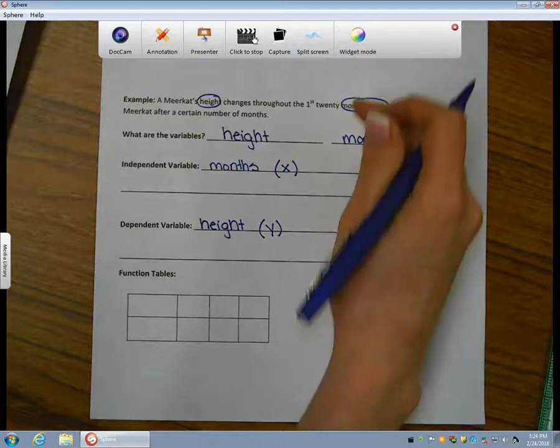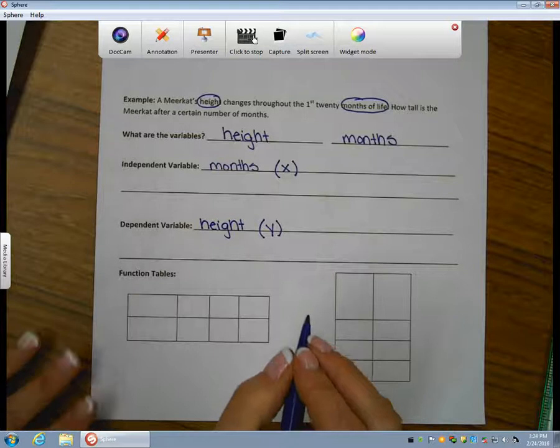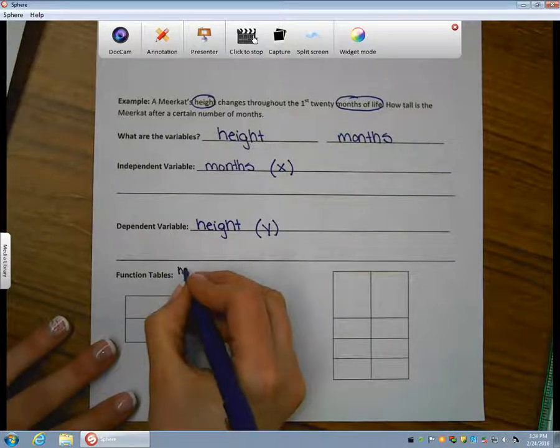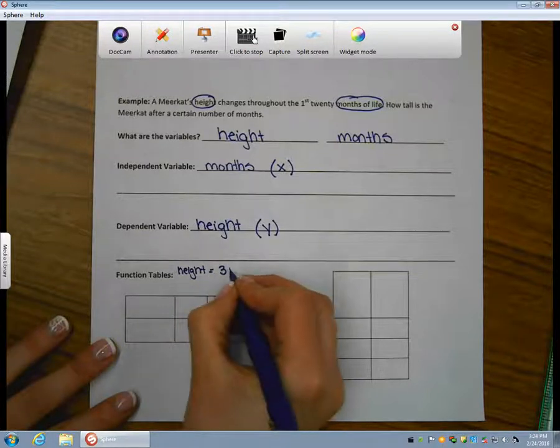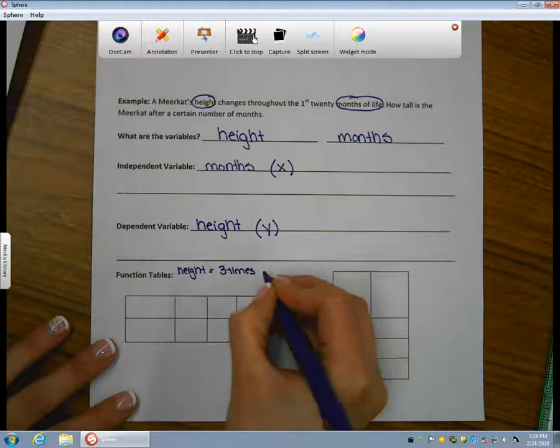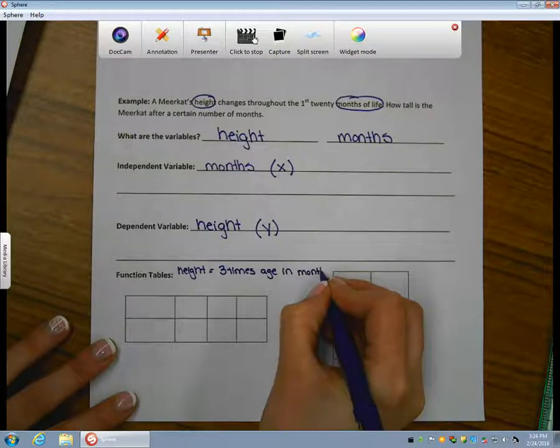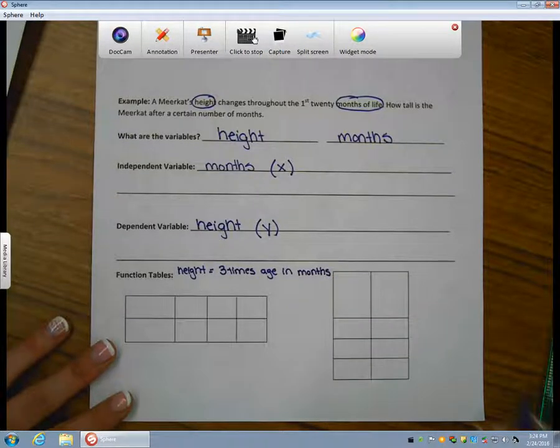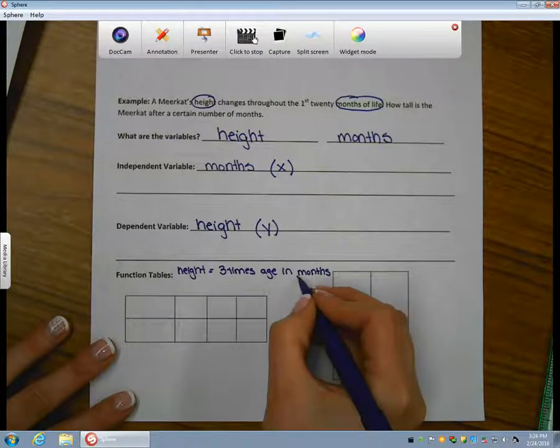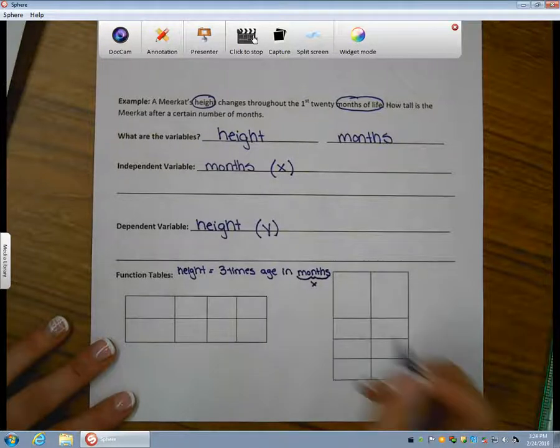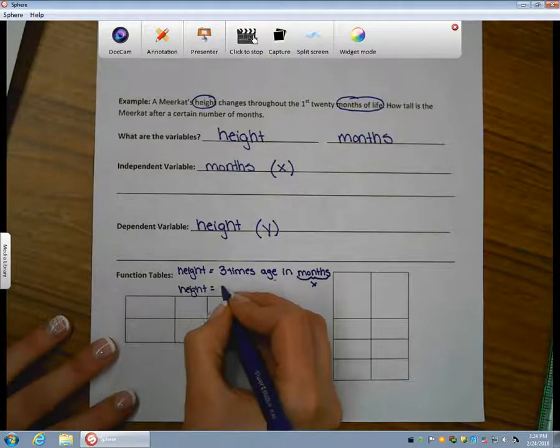Now, I'm going to change this problem a little bit. I'm going to tell you that the height of the meerkat is equal to three times its age in months. Well, since we've said three times its age in months, and the months are representing with x, we can make a rule for this as height is equal to 3x.